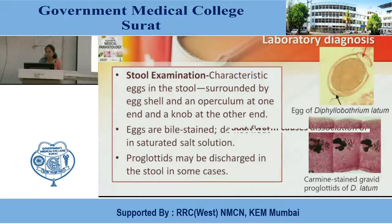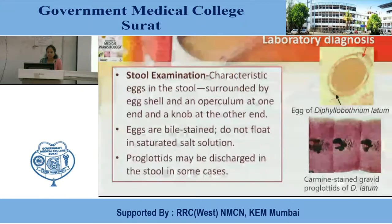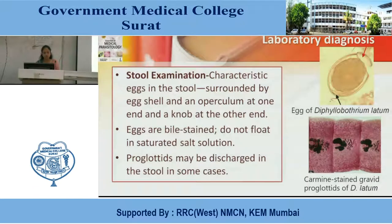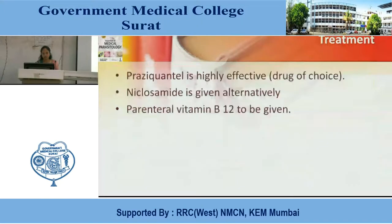Lab diagnosis: in stool examination, if infection is present, eggs of D. latum will be present. Characteristics of eggs in stool: surrounded by egg shell, operculum at one end and a knob at the other end; eggs are bile-stained and do not float in saturated salt solution. Proglottids may be discharged in the stool in some cases. Carmine-stained gravid proglottids of D. latum can be seen. Treatment: Praziquantel is the highly effective drug of choice. Alternatively, niclosamide can be given; parenteral vitamin B12 should also be given.